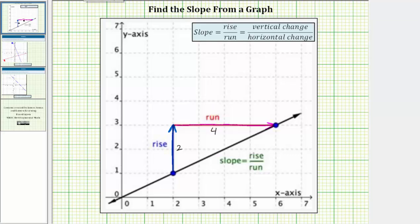And therefore the slope — and we often use the variable m for slope — is equal to two over four, or two-fourths, which simplifies to one-half.